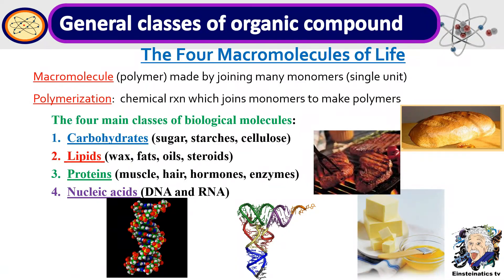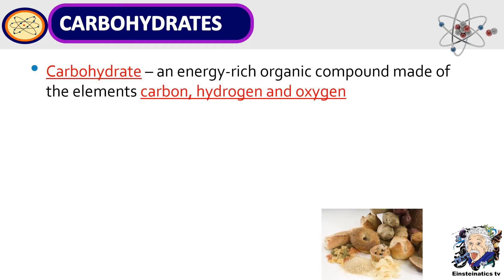Now let's proceed to the general classes of organic compounds — another reason why carbon is called the backbone of life. There are four macromolecules of life. Macromolecules are polymers made by joining many monomers, or single units. There are four main classes of biological molecules: carbohydrates, lipids, proteins, and nucleic acids. Carbohydrates are energy-rich organic compounds made up of the elements carbon, hydrogen, and oxygen.